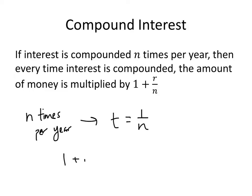And that means that that factor that we're multiplying by, 1 plus rt, we're going to rewrite as 1 plus r times 1 over n, which is just 1 plus r over n. So that's why this formula is going to look a little bit different.